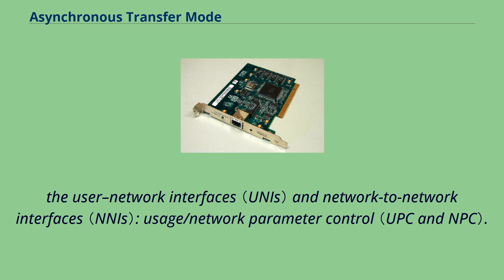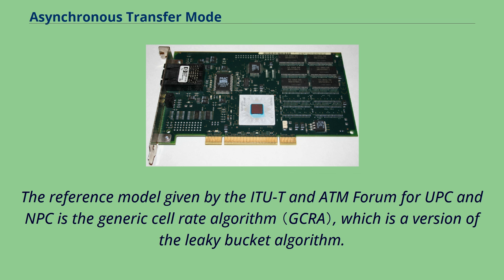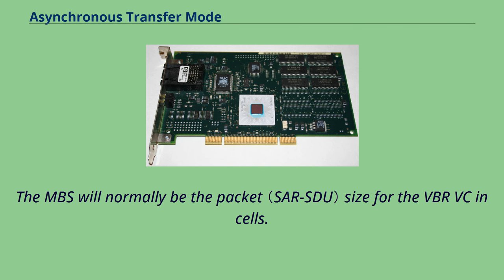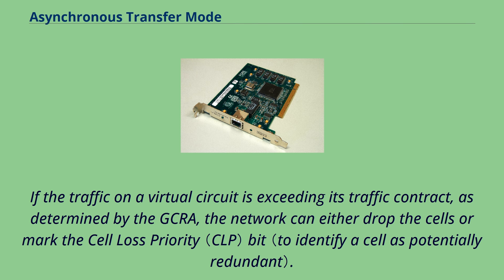The reference model given by the ITU-T and ATM Forum for UPC and NPC is the generic cell rate algorithm (GCRA), which is a version of the leaky bucket algorithm. CBR traffic will normally be policed to a PCR and CDVT alone, whereas VBR traffic will normally be policed using a dual leaky bucket controller to a PCR and CDVT and an SCR and maximum burst size. If the traffic on a virtual circuit is exceeding its traffic contract as determined by the GCRA, the network can either drop the cells or mark the cell loss priority bit.